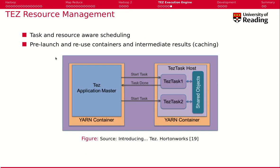TESS also tries to be task and resource aware. It runs constantly, reuses the existing containers that have been started using YARN, and tries to reuse those results — doing some kind of caching. So we see here that we have two TESS tasks that access some kind of shared objects stored on this host inside the container.